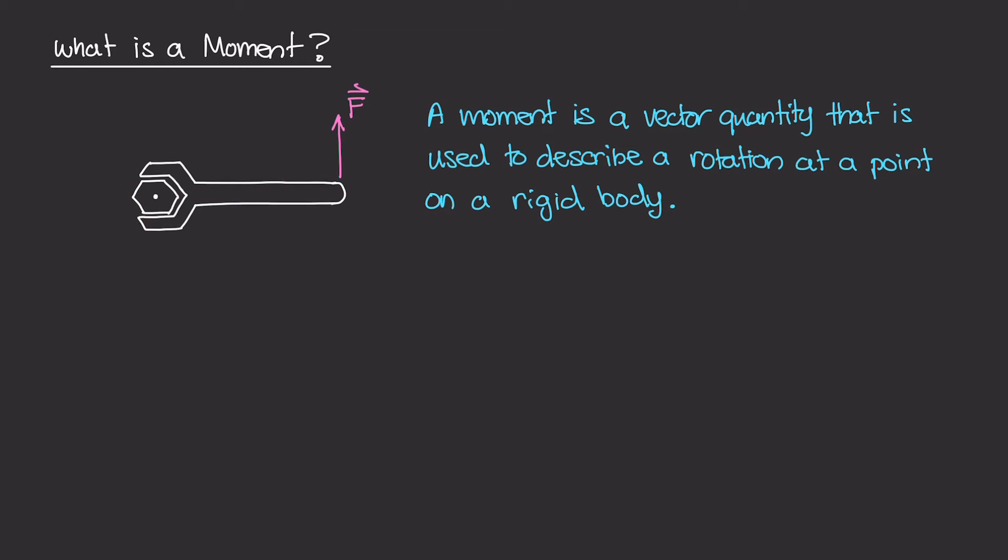Now this is important because the mathematical definition of a moment is this right here. We have a moment about some point O, and remember, we have a vector arrow drawn over M because moment is a vector quantity. The moment itself is calculated as R cross F.